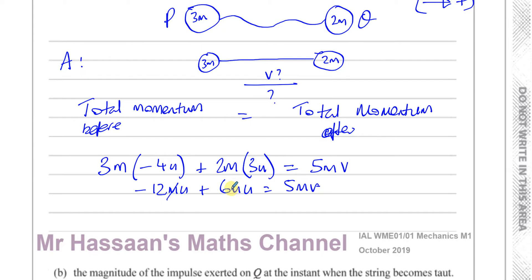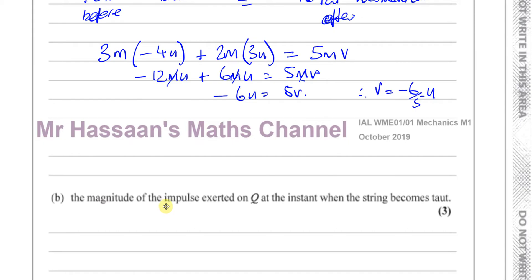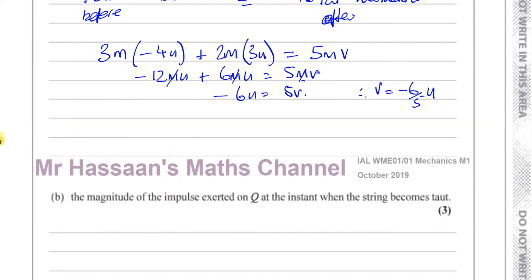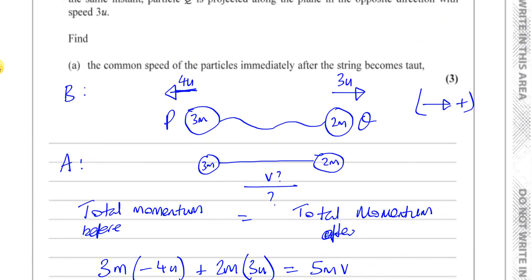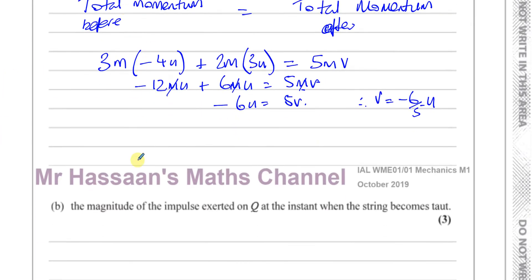The m's cancel, and we're left with minus 6u equals 5v. Therefore, v is equal to minus 6/5 u. That's the velocity. They're only asking for the magnitude of the speed, which is a scalar quantity. So the speed is equal to 6/5 u.